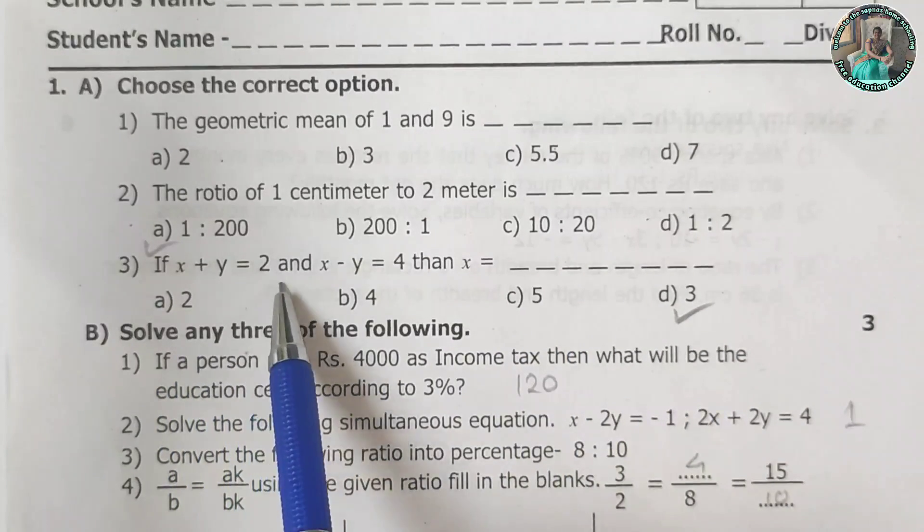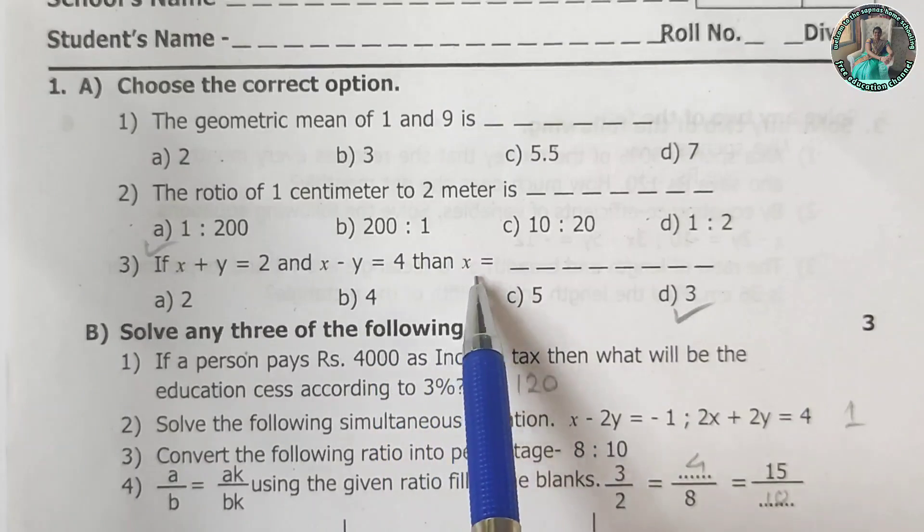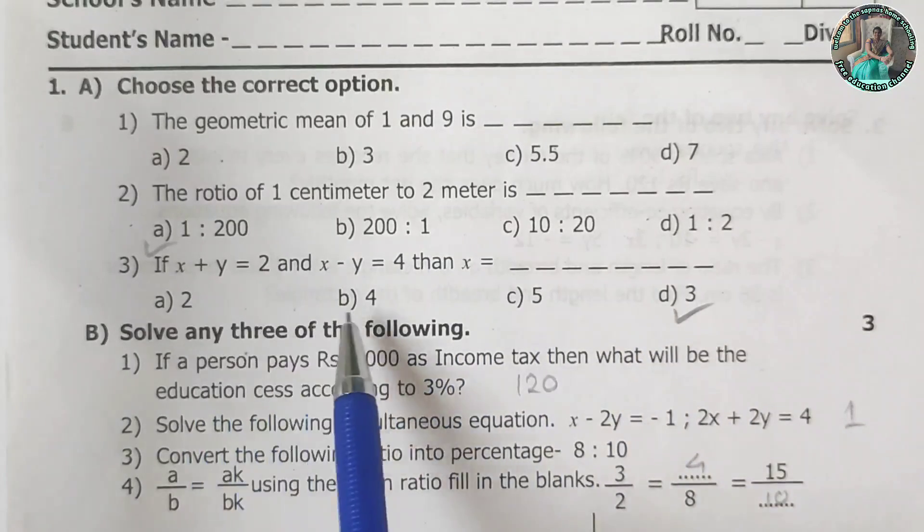If x plus y is equal to 2 and x minus y is equal to 4, then x is equal to dash. 2, 4, 5 or 3.